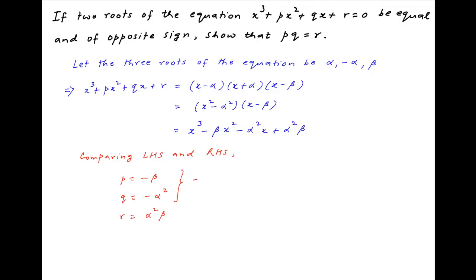Taking the product of the first two equations, we have pq is equal to alpha square beta, and note that this is equal to r per the third equation. Therefore, pq is equal to r, which is the desired result.